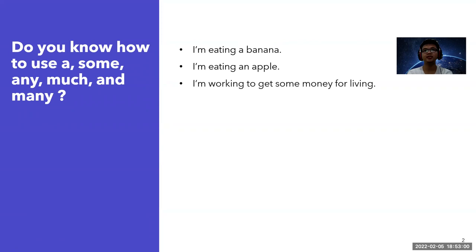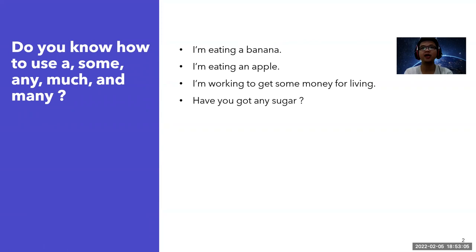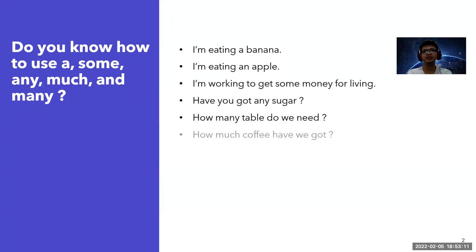Next: 'I'm working to get some money for living.' Then: 'Have you got any sugar?' 'How many tables do we need?' And last: 'How much coffee have you got?' This is just an example for this topic.